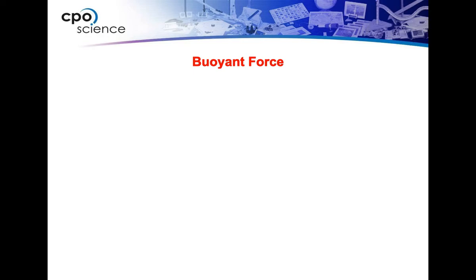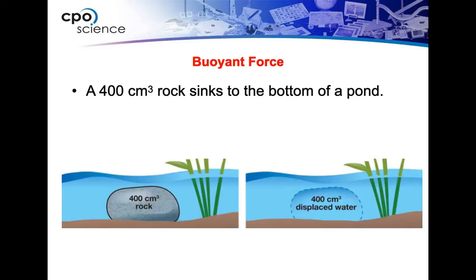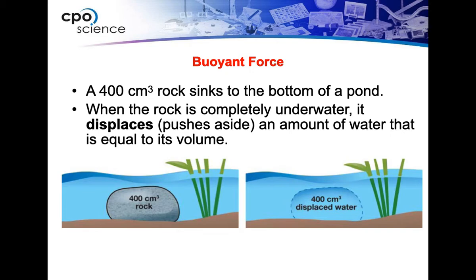If you've ever seen a balloon floating — now we're talking not in water, but in air — that balloon is floating because air is pushing back up on the balloon. The book uses this example: let's say we have a 400 cubic centimeter rock that has sunk to the bottom of a pond, as most rocks do. That rock is going to displace — push aside — 400 cubic centimeters of water. When the rock is completely underwater, it displaces an amount of water equal to its volume.